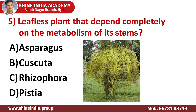The fifth interesting question: a leafless plant that depends completely on the metabolism of its roots. It is a leafless parasitic herb having whitish or yellow filamentous stems. Its seeds are commonly used as a tonic for liver and kidney in herbal medicines. It has no chlorophyll and cannot make its own food by photosynthesis. Instead, it grows on other plants using their nutrients for its growth, weakening the host plant.